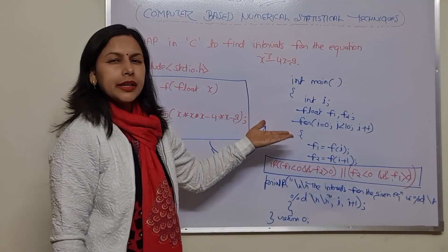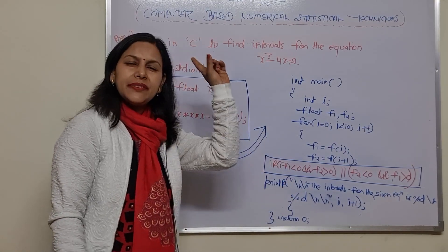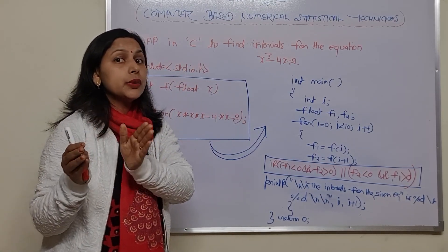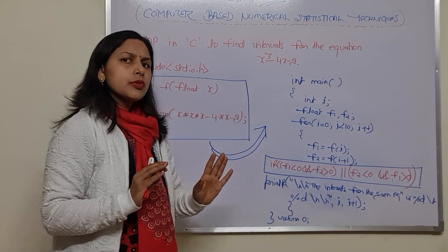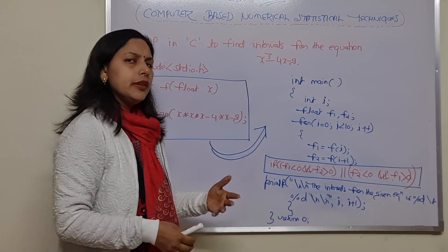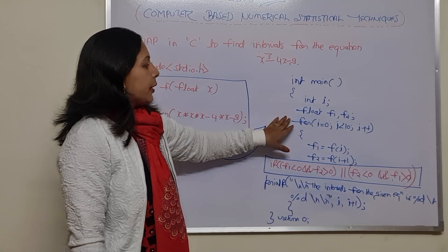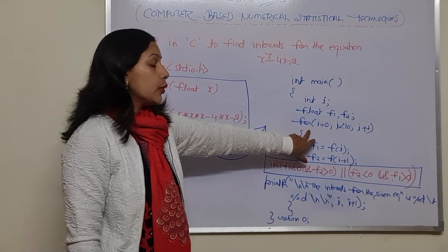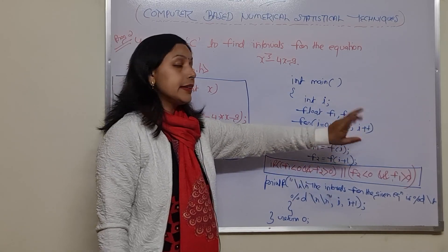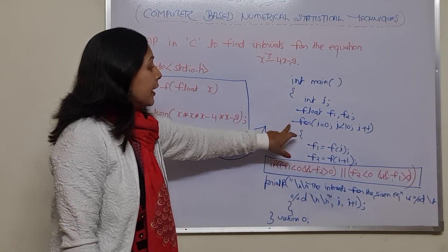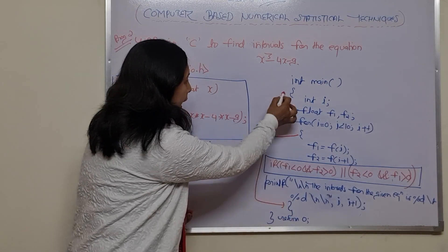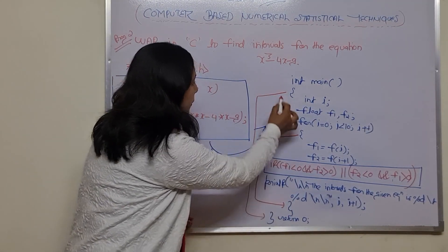As I told you in the previous video, the value for x has been given — for example, 0 till 10. So you have to find out the intervals within this range only. After that, you are taking one for loop because iteration would be done here. So: for i equals to 0, i is less than 10, and i plus plus. This is the range for the for loop, and this is the range for the main function.